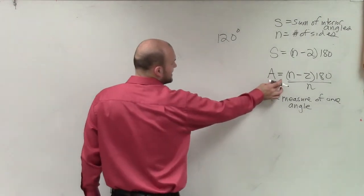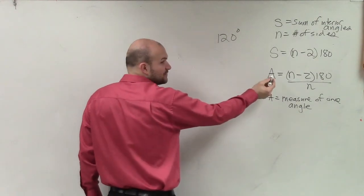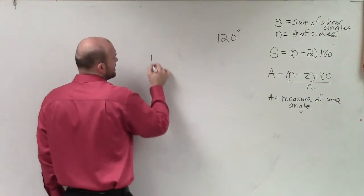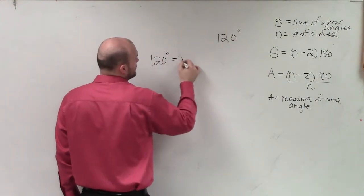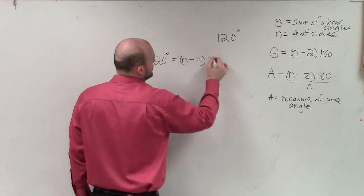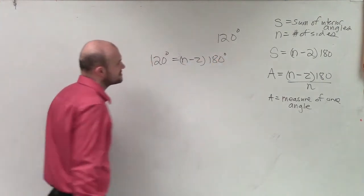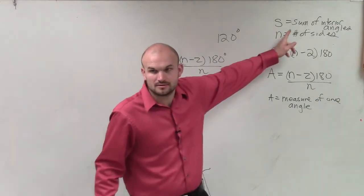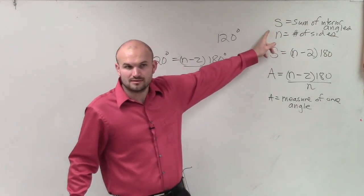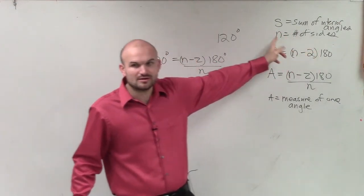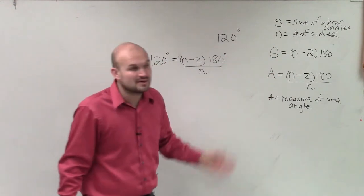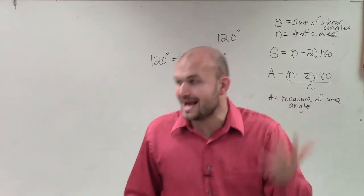So I need to use this. And now I know what the measure of one interior angle is, right? It's 120. So I say 120 degrees equals n minus 2 times 180 degrees divided by n. And again, what does n represent? Number of sides. And what is the question asking for? Number of sides. So we need to figure out what n is. So we need to solve an equation for n.